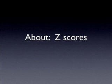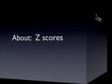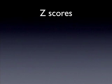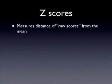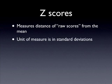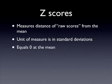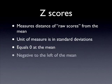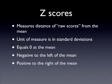In this podcast, I'm going to talk about z-scores. Z-scores measure the distance of raw scores from the mean. The unit of measure is in standard deviations. Z-scores are equal to zero at the mean, negative to the left of the mean, and positive to the right of the mean.